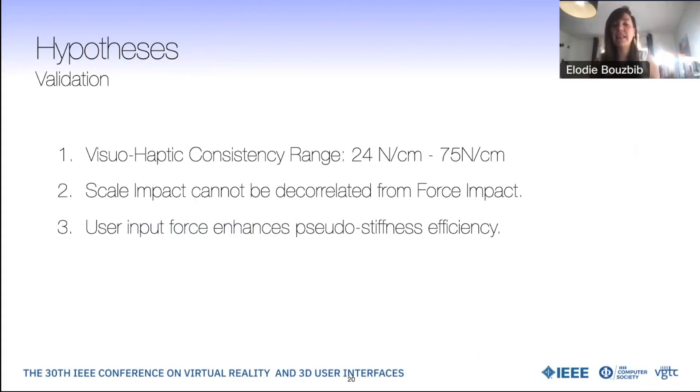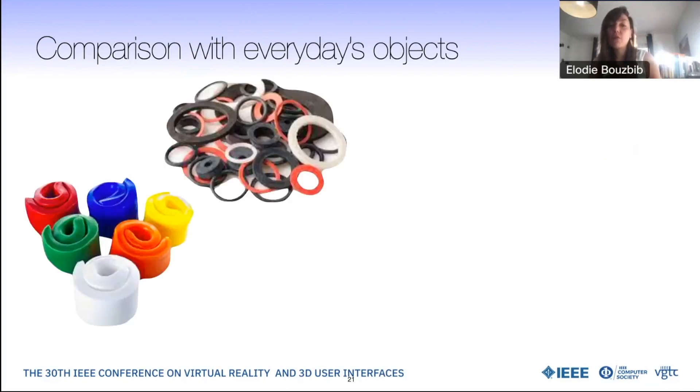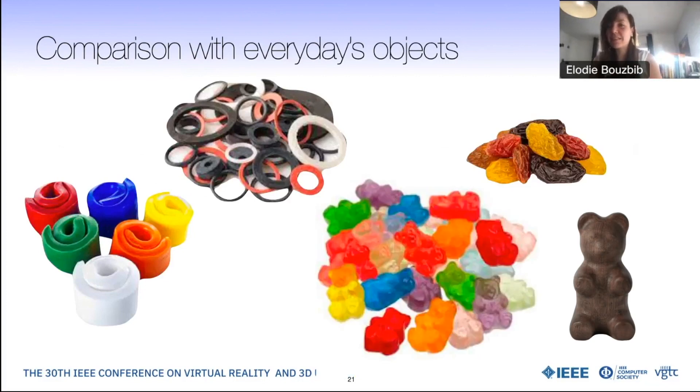We validated and discussed hypothesis and quantified tangible pseudo stiffness perceptual thresholds. But what does it really mean? In comparison with everyday objects, our results show that a tangible object in VR can be as compliant as silicon or rubber material or resins or even gummy bears using pseudo-haptic techniques.